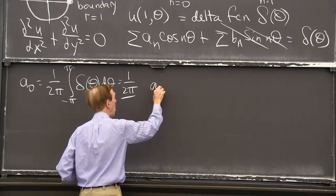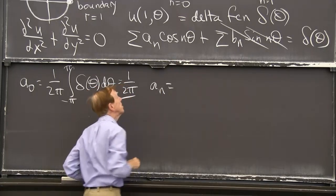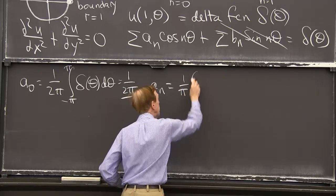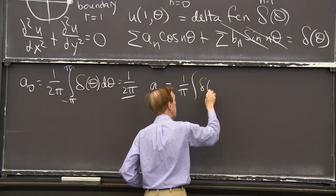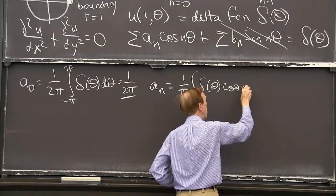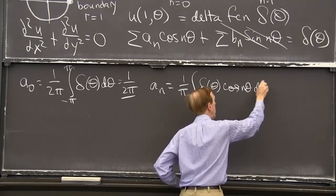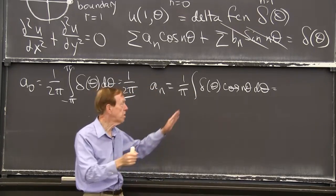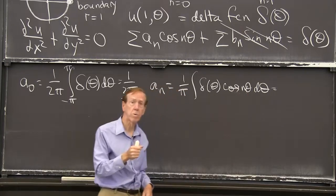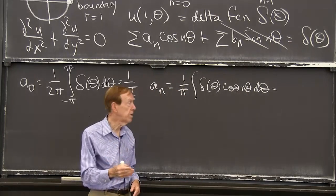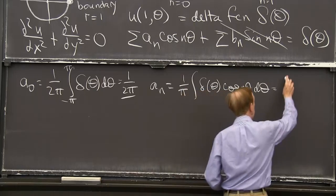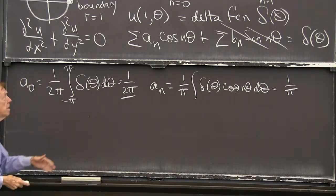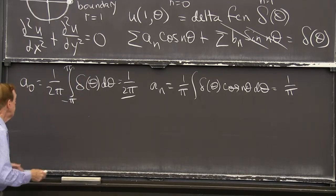And then we get 1 over 2π as the average. The other a_n's, the coefficients of the cosines, are 1 over π times the integral of our delta function, times cos n theta d theta. And the delta function, that point source, picks out that number at theta equals 0. And that number is 1. So I'm getting 1 over π. So finally, I now know the a's and b's. When I put those in, that tells me the solution.